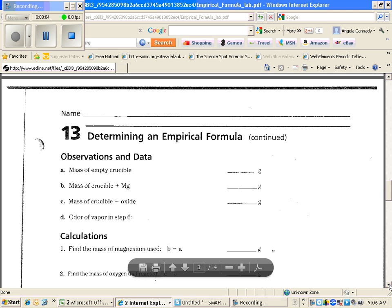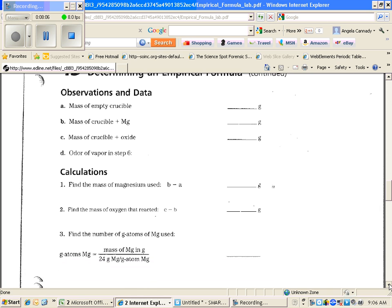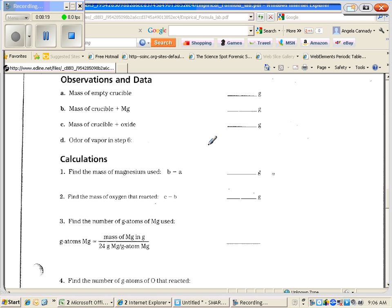One good thing about these calculations is it kind of helps you out. In number one, you're going to do B minus A. So let me do an example. Let's suppose that you got, for the mass of the empty crucible, you got 10.67 grams.